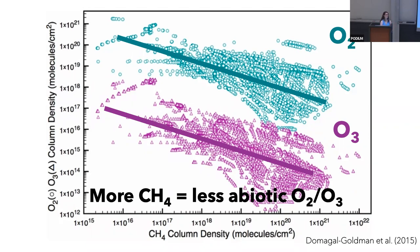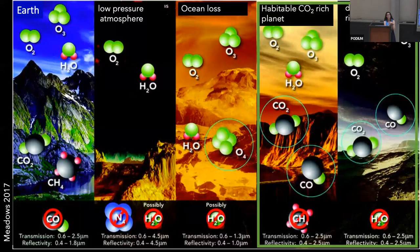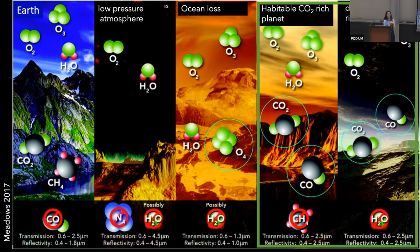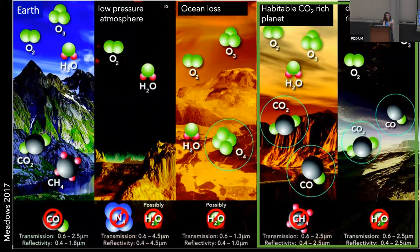A question about what happens to the carbon in 100-bar oxygen atmospheres. You'd probably still have a lot of CO2 in those atmospheres. On a terrestrial, Earth-ish or Venus-ish planet, you're going to have CO2 outgassing, and over long time periods you'd end up with a mantle that has outgassed its CO2. Venus is thought to have outgassed basically all of its mantle CO2 — that's why it has a 90-bar atmosphere. So these types of planets with massive oxygen atmospheres probably have a lot of CO2 as well.